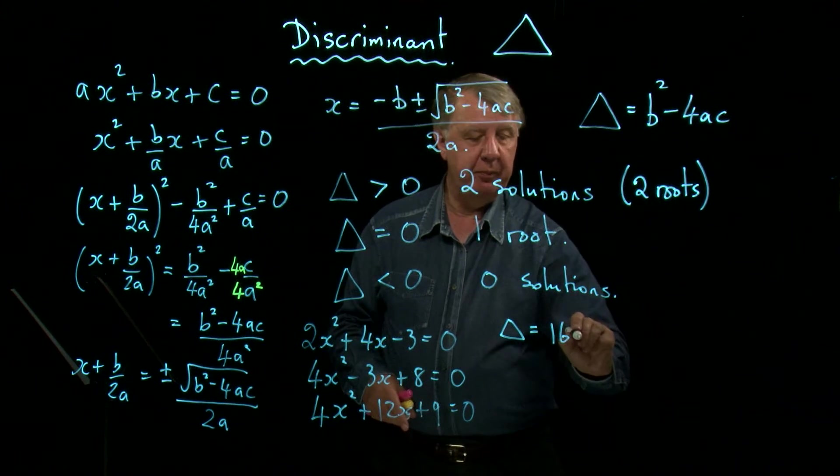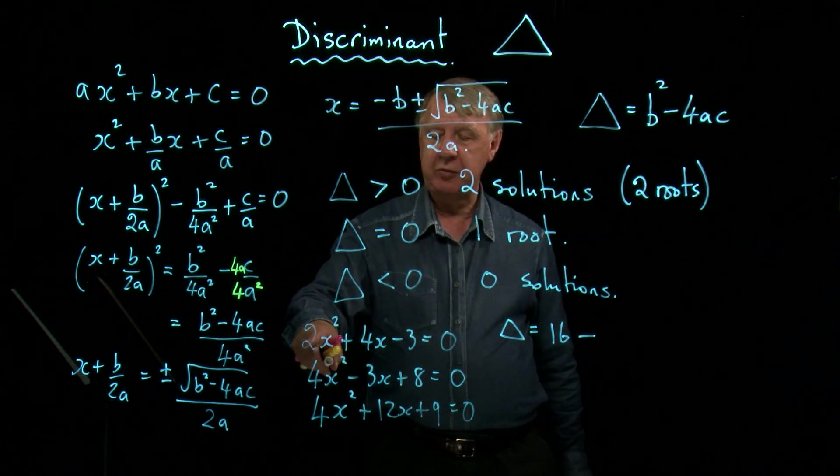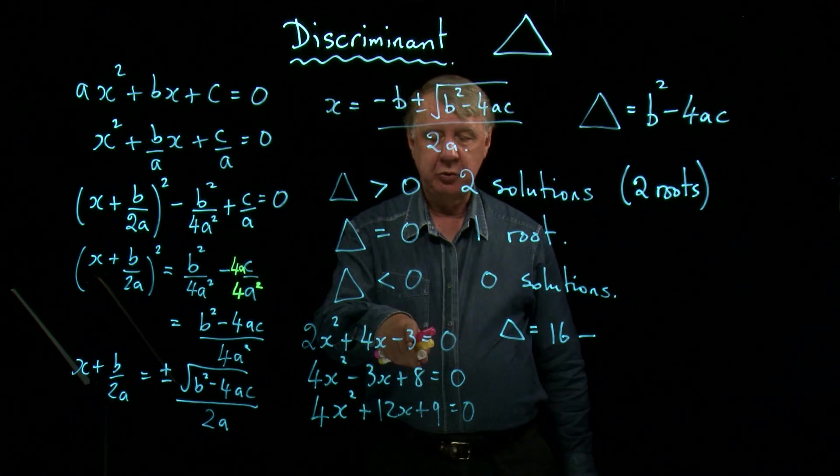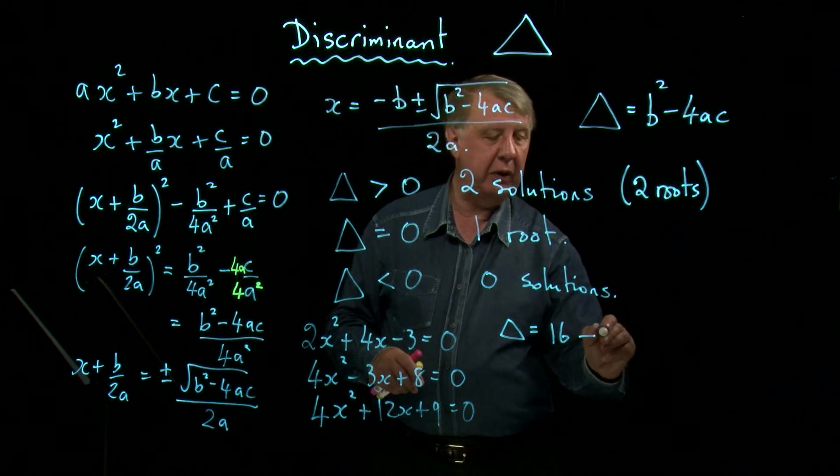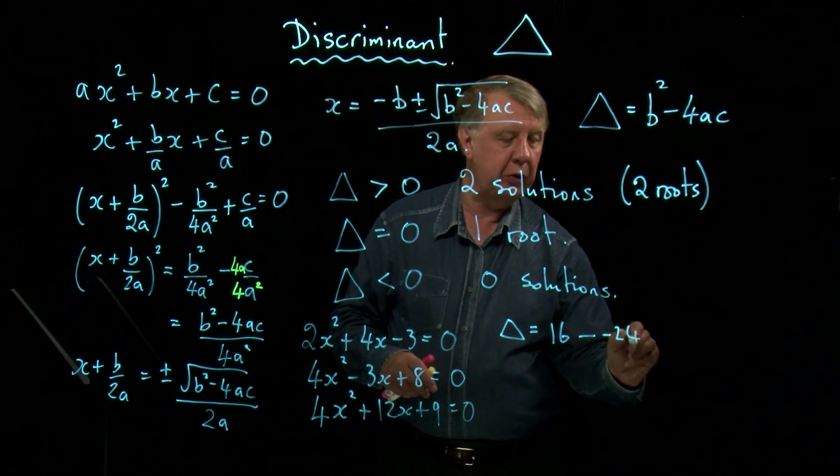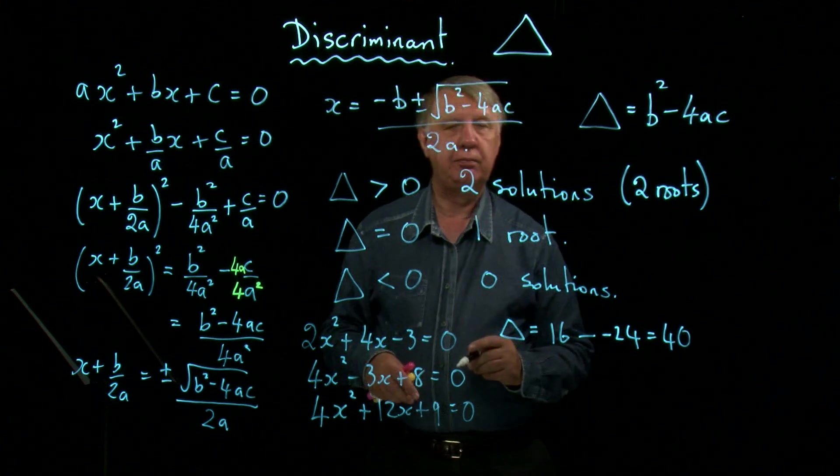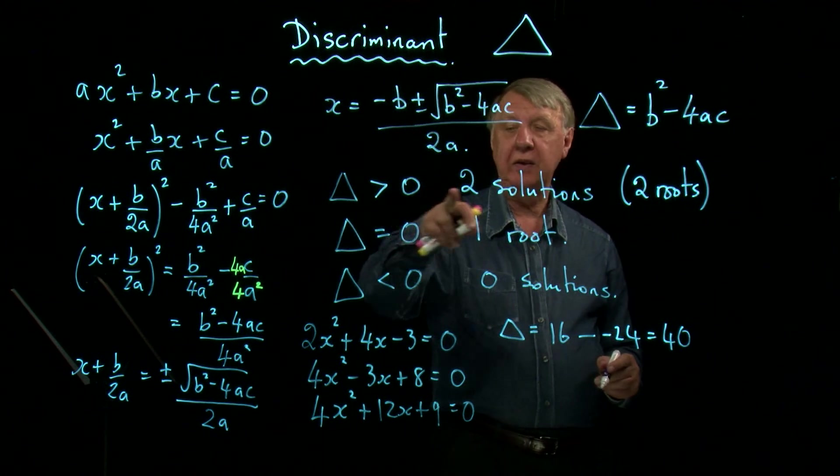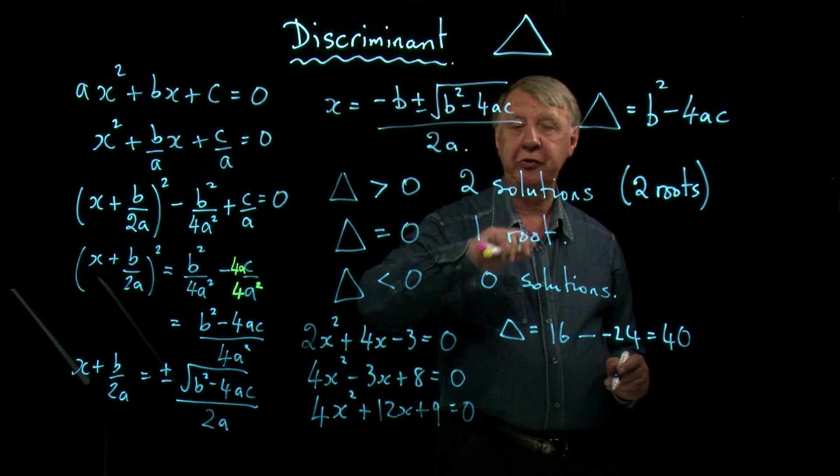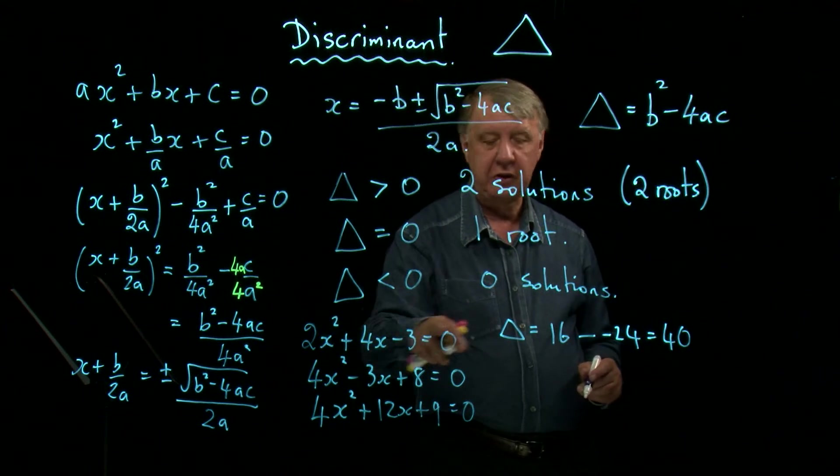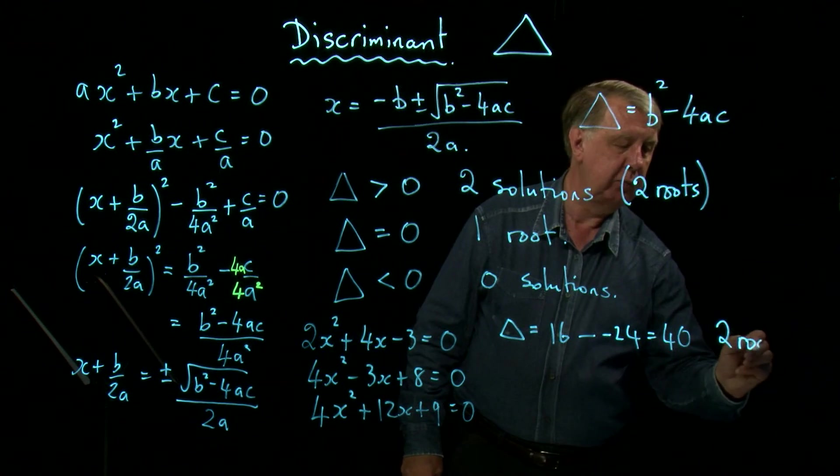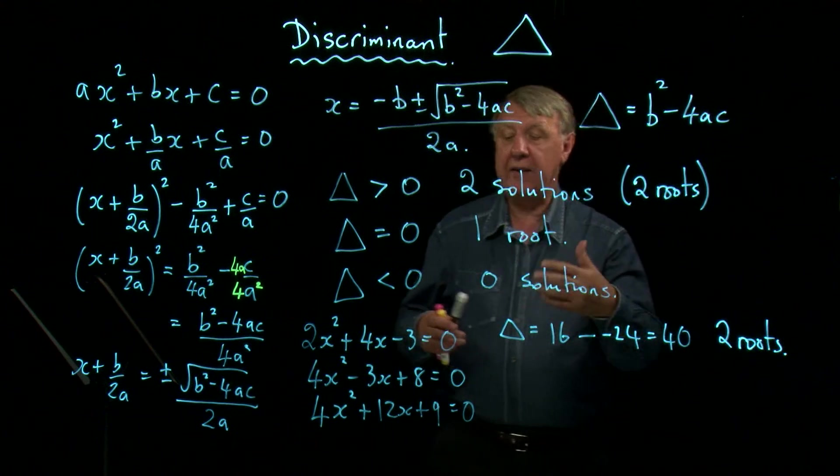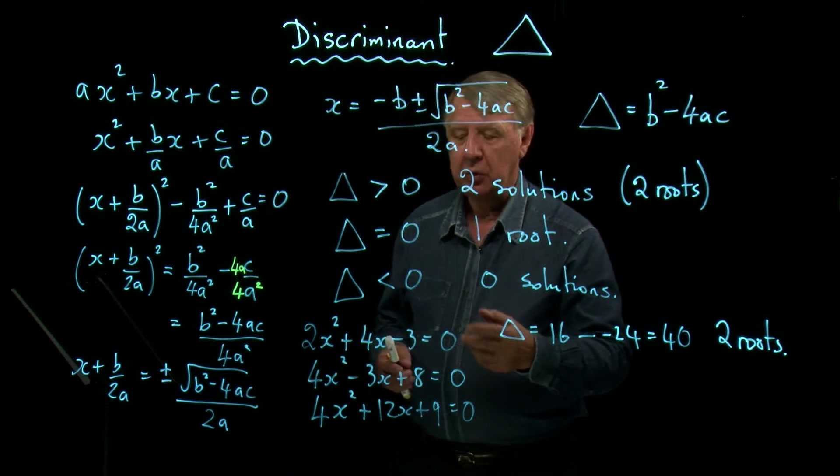Take away 4ac. So that's 4 times 2 is 8. Times 3 is negative 24. Because it's negative 3. So it's 16 take away negative 24, which is plus 40. Which is of course positive. What does the rule say? If the discriminant is positive, there are two solutions. So this equation here has got two roots. And notice, I don't have to work them out. I get this information without working them out.